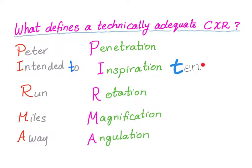The film should give you the ability to count ten ribs on the chest X-ray. We will talk about each of these characteristics in subsequent videos, but today we just want to focus on memorizing those five characteristics of the technically adequate chest X-ray.